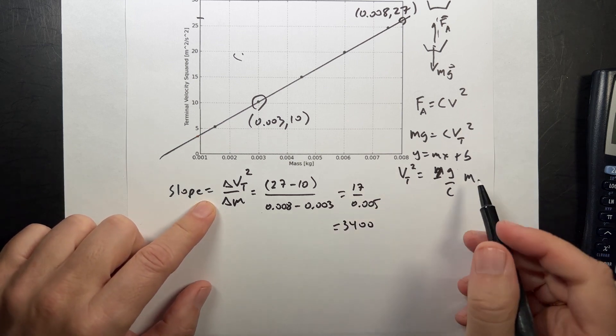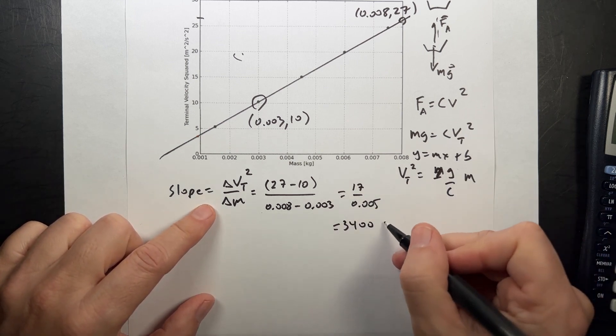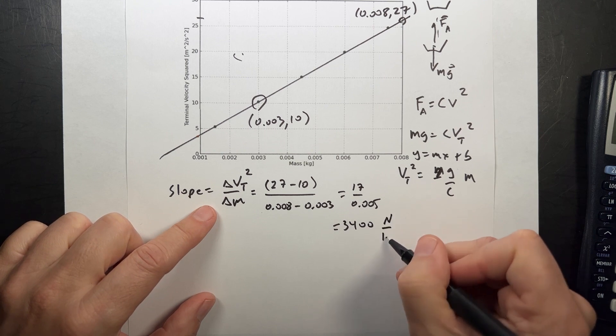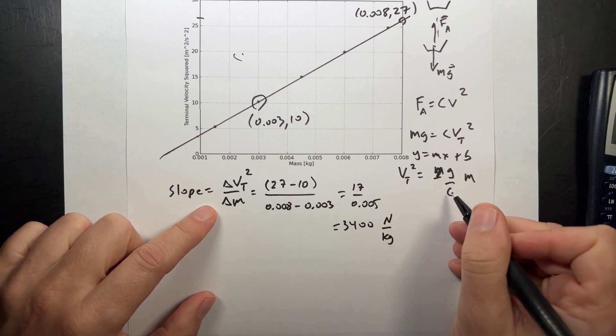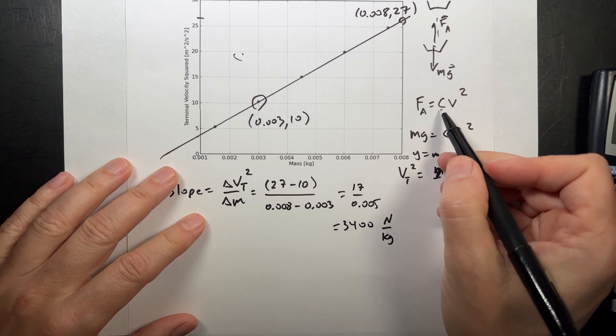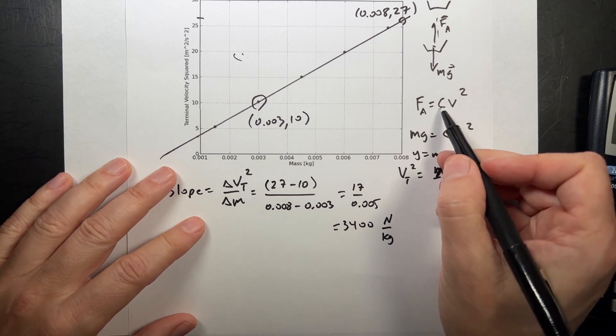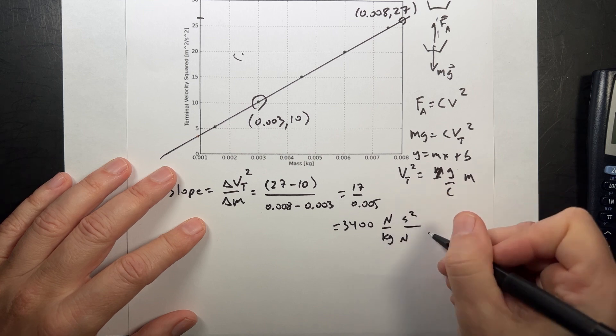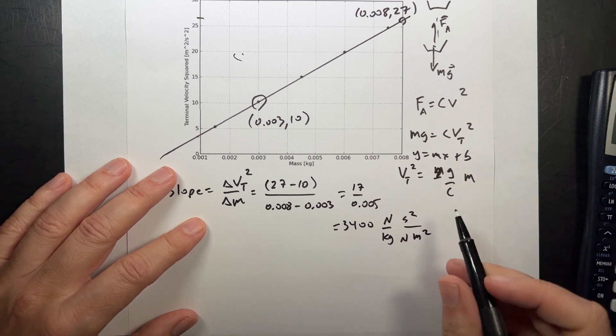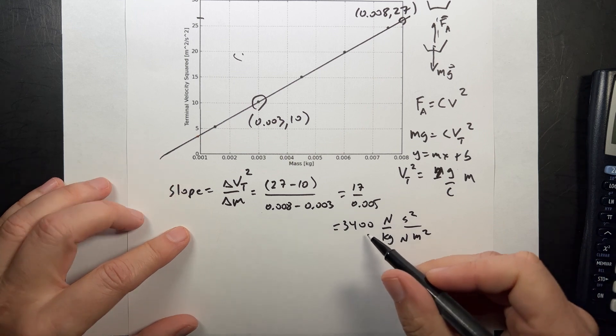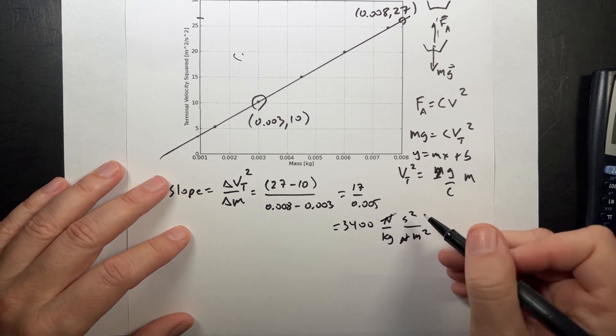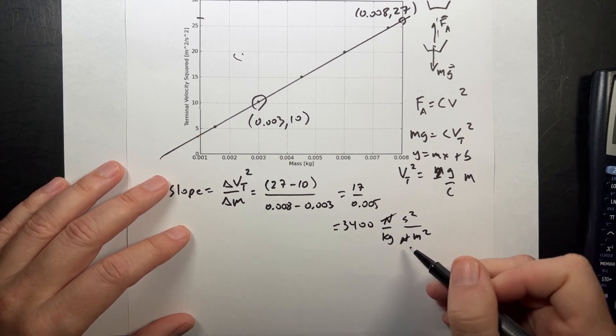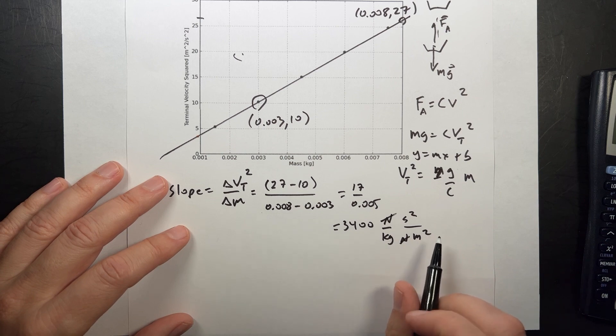And that would have units of, let's just write this as newtons per kilogram, and then c would have to have units of newtons second squared per meter squared. So it's going to be newtons second squared per meter squared. And that would be the units of the slope. The newtons cancel. And I get, I think that's right.